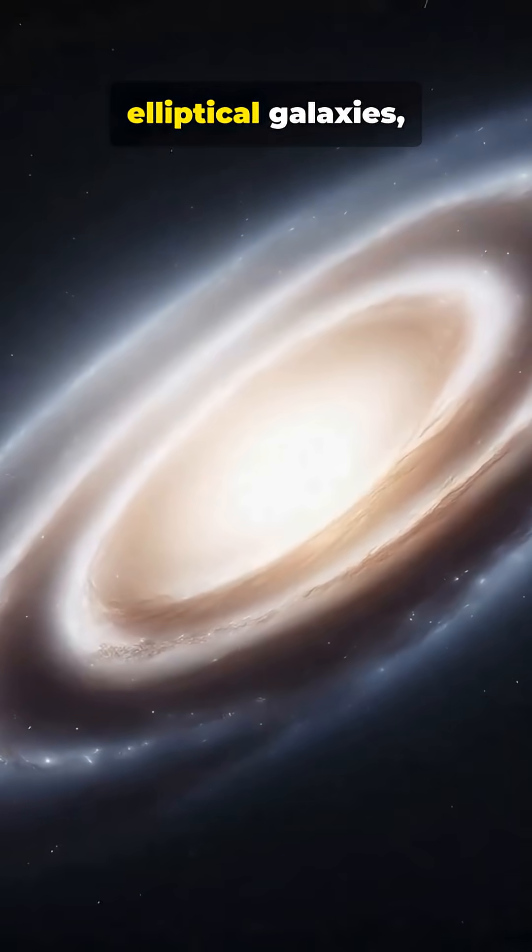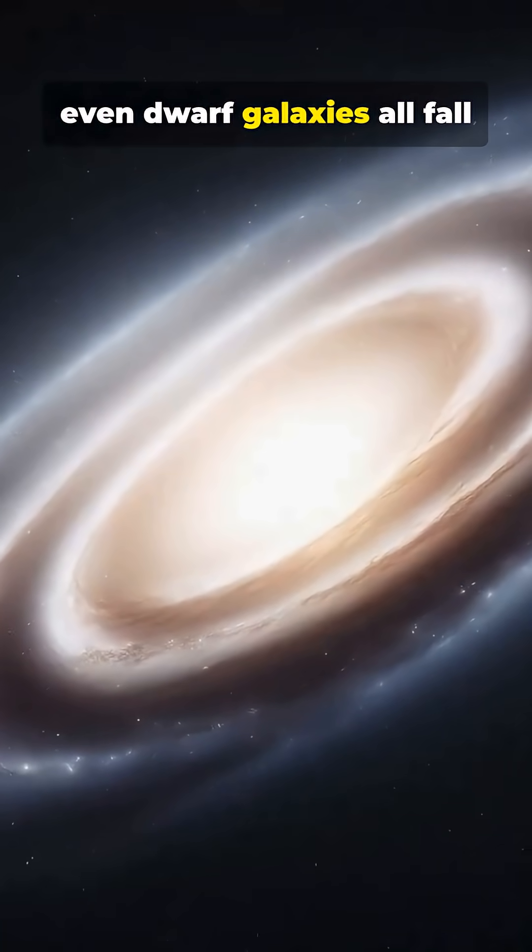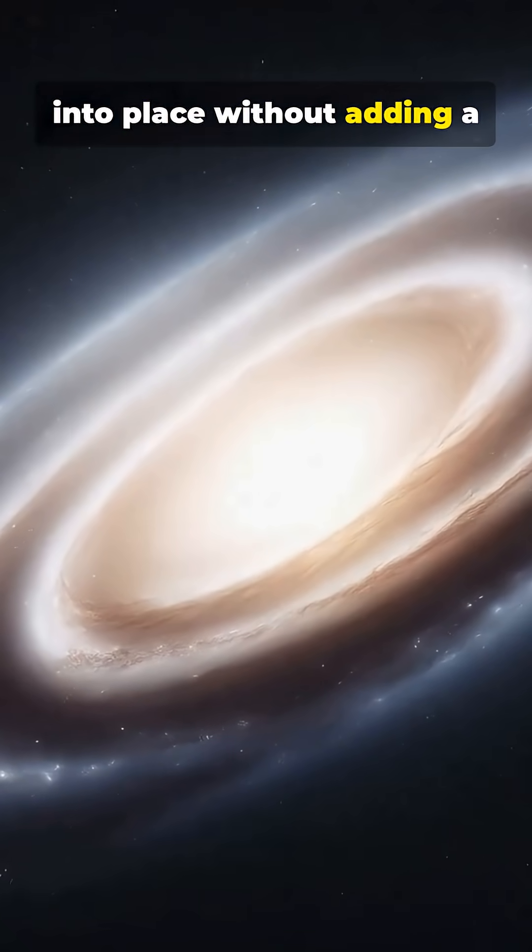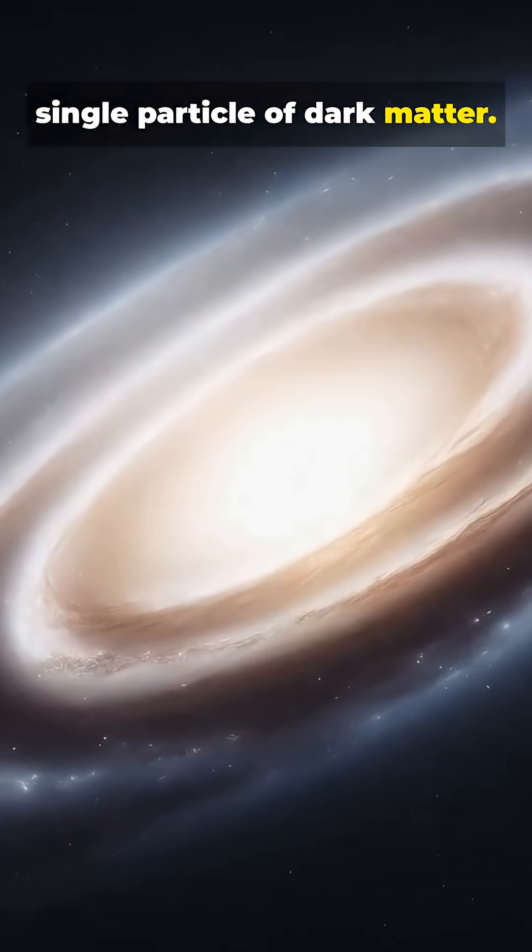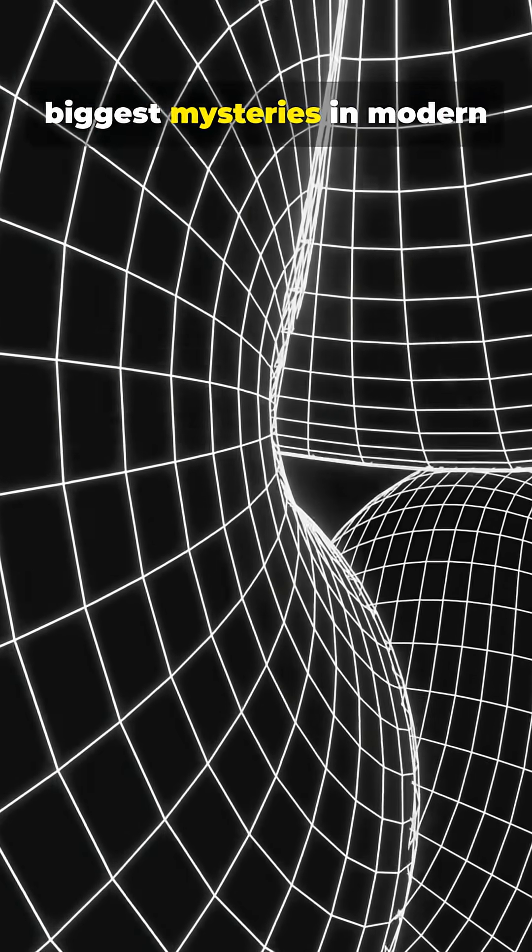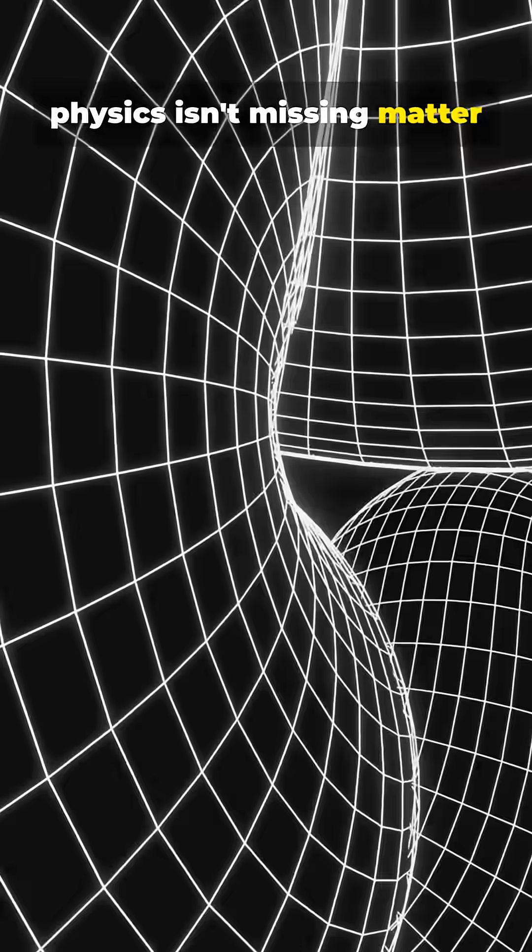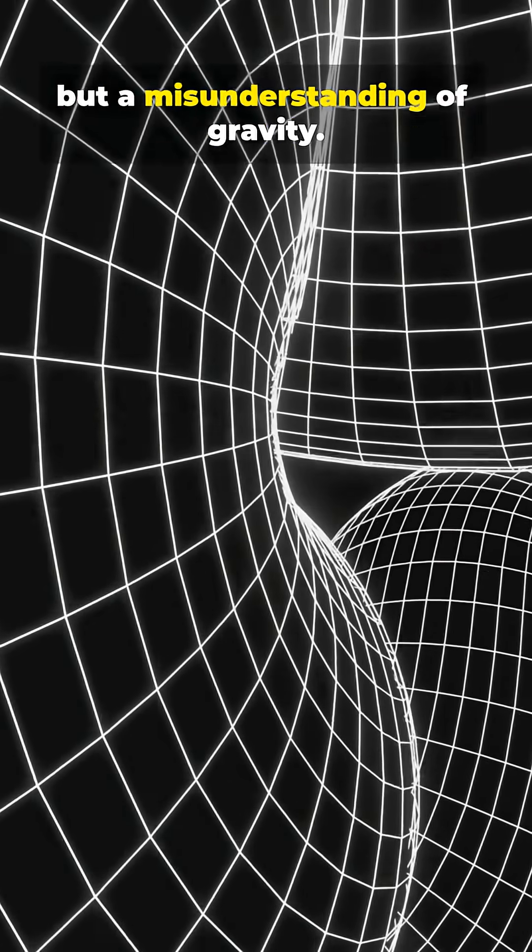Spiral galaxies, elliptical galaxies, even dwarf galaxies all fall into place without adding a single particle of dark matter. If this theory holds up, it would mean one of the biggest mysteries in modern physics isn't missing matter at all, but a misunderstanding of gravity.